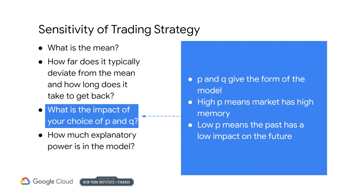Suppose you trade a small-cap stock. You run an AR model on the returns and you get a high coefficient. This says that the market has a memory — the past influences what comes next. Suppose you trade an extremely liquid, exchange-traded fund. You run an AR model on the returns and you get a low coefficient. This says that the market is more resilient — the past doesn't influence what comes next. This could indicate very little market impact. The AR coefficients, in particular, are easy to interpret. They tell you how important the past is in weighting what comes next.